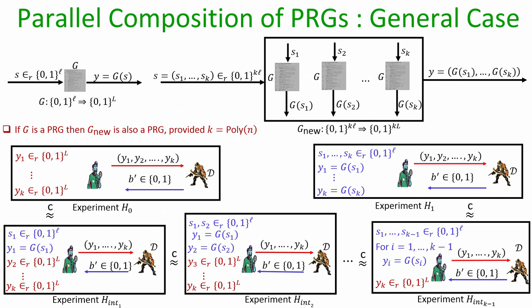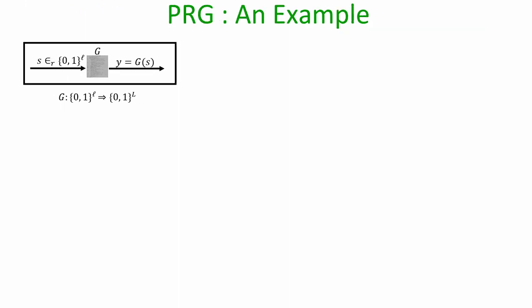Summing all k distinguishing advantages of the adversary, we show the distinguishing advantage of any polynomial time distinguisher between experiment H0 and H1 is upper bounded by k times a negligible function. Since k is polynomial and a polynomial times a negligible function is also negligible, this proves that algorithm G_new is also a secure PRG.